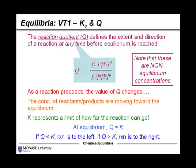The concentration of the reactants and products are moving towards the equilibrium. In other words, K really represents a limit of how far the reaction can go. And at the equilibrium, Q, the reaction quotient, equals K.